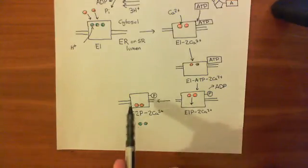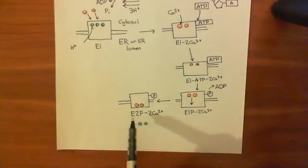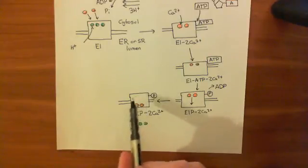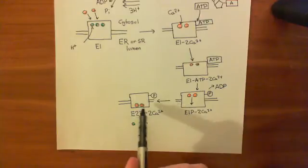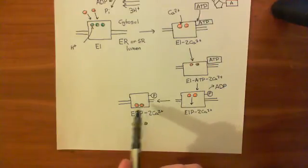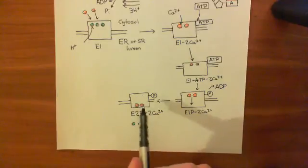We've seen how the SERCA protein has now gone into this E2 conformation, where the ion-binding sites are closer to the lumen of the endoplasmic reticulum than to the cytosol.